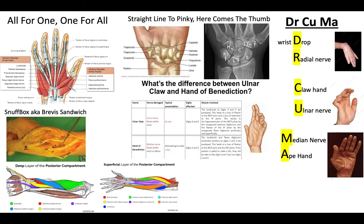Knowing the innervation can be kind of tricky. For the innervation, the Adductor Pollicis, your lumbricals for the third and fourth digit, and all of your pinky muscles here in the hand are all going to be innervated by the deep branch of the ulnar nerve. They will also be supplied by the deep palmar arch, which originates from the ulnar artery.